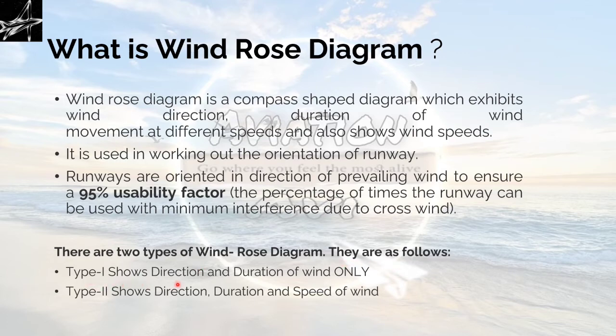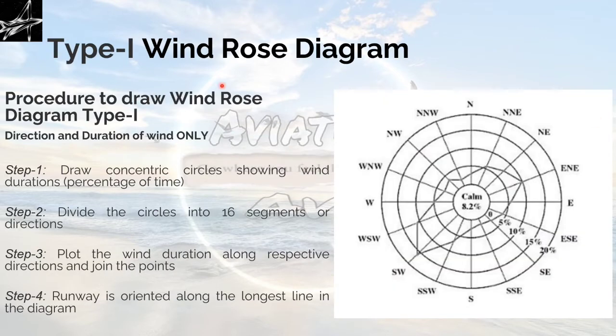Type 1 shows direction and duration of wind only. Step 1 is to draw concentric circles showing wind durations from 0 to 5% of time, 10% of the time, 15% of the time, 20% of the time and so on. The middle part is always shown for calm, meaning wind speed less than 6 km per hour.